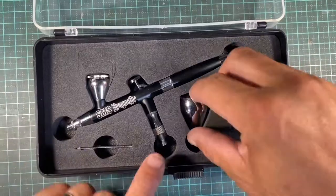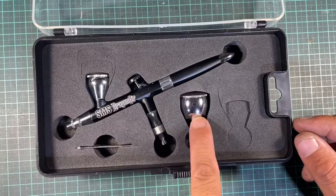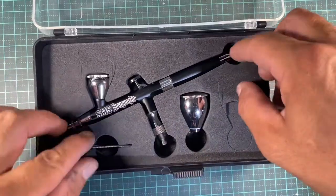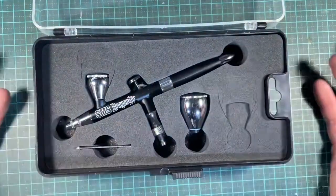So what's in the box? As you can see, you get the gun itself, you get a wrench, you get a large cup, and underneath, I'm not going to pull it out, well I will, but it's a bit of a pain to get out.